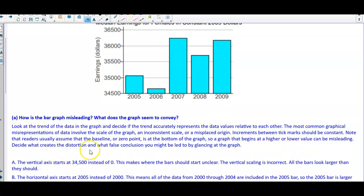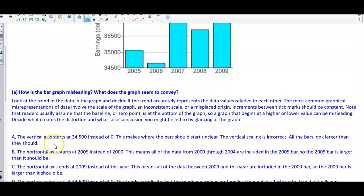We want to decide what creates the distortion and what false conclusion you might be led to by glancing at the graph. We can see that there's something going on over here. It says the vertical axis starts at 34,500 instead of zero, which is true. This makes where the bars should start unclear. The vertical scaling is incorrect. All the bars look larger than they should. So this could be the possible answer.